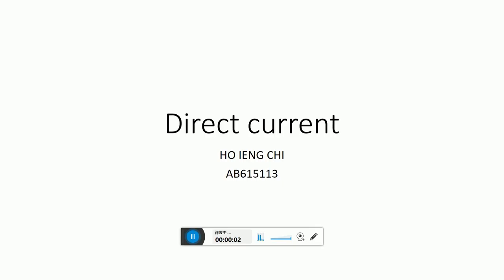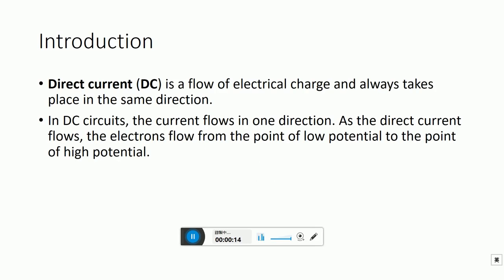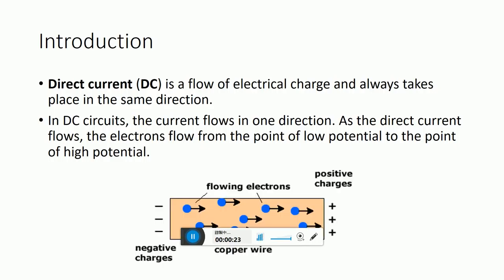Hello, my name is Ho Ying-ji. The direct current is a flow of electrical charge and always takes place in the same direction. In DC circuits, the current flows in one direction. As the direct current flows, the electrons flow from the point of low potential to the point of high potential.